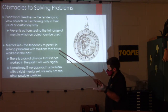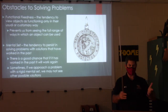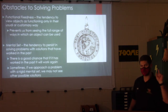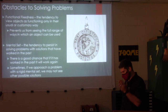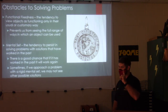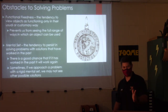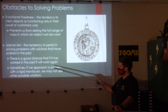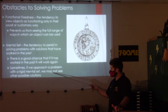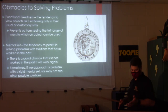Functional fixedness prevents us from seeing the full range of ways an object can be used. Mental set is similar — the tendency to persist in solving problems with solutions that have worked in the past. This can put blinders on. If it worked last time you might do it again, but maybe the situation is a little different. You get stuck because you're using a solution that doesn't quite fit. If we approach a problem with a rigid mental set, we may not see faster, quicker, better solutions.